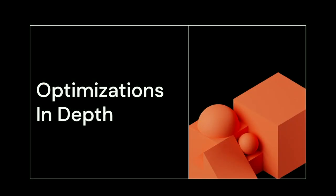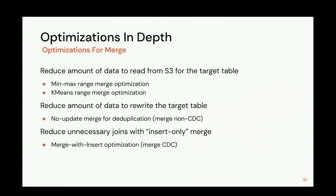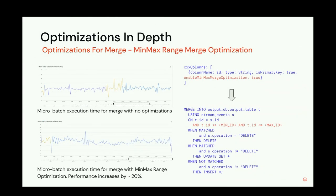Next, let's dive into the optimizations we've implemented in Swoom. We've put a lot of effort into optimizing merge queries, and all our work can be categorized into three perspectives: how to reduce the amount of data to load from S3 for the target table; how to reduce the amount of data to write for the target table; and how to reduce unnecessary shuffles or joins, or replace the merge query with something else.